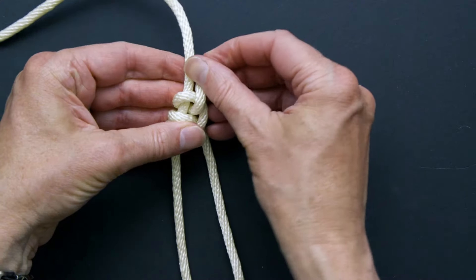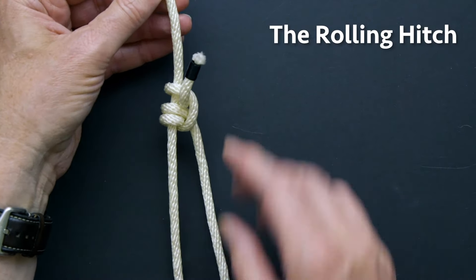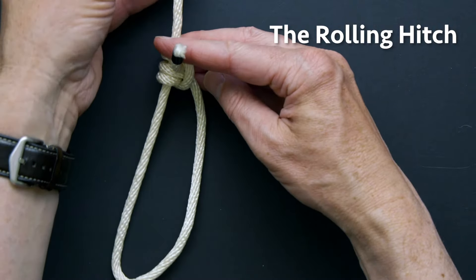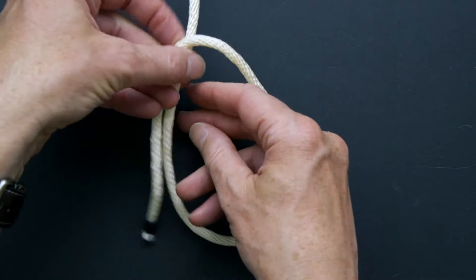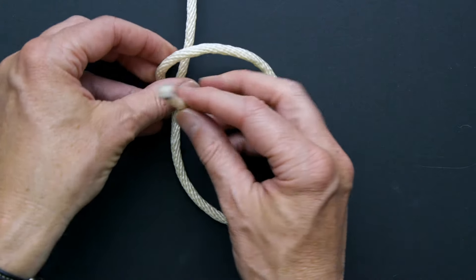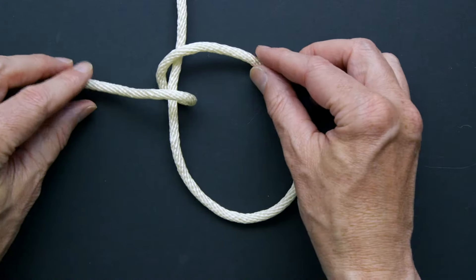The rolling hitch helps us hang items. Like the clove hitch it tightens under load, but when not, it can be easily adjusted. Tying it in a single line creates an adjustable loop at the end for hanging objects in the frame, like I did with Pickle Rick.